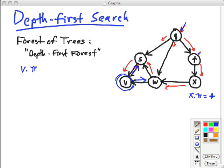Now breadth-first search also had a v.d, which was for distance from the start node. Here, that's going to have a different meaning, so we're going to get back to that in a second.